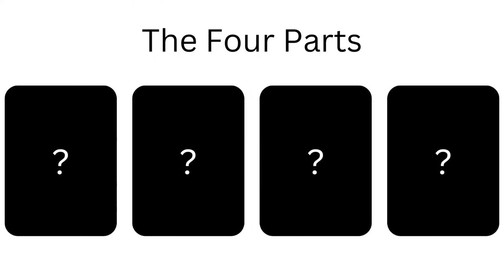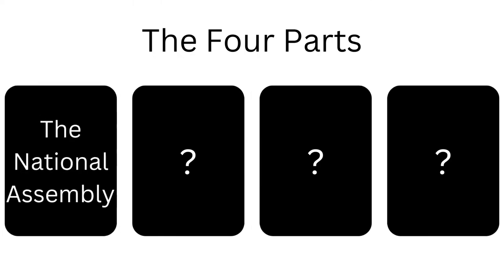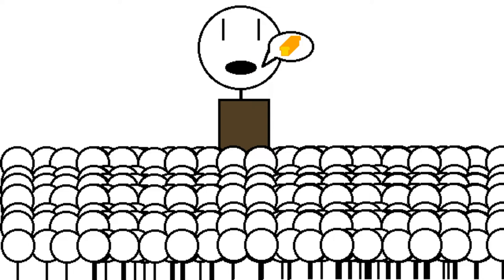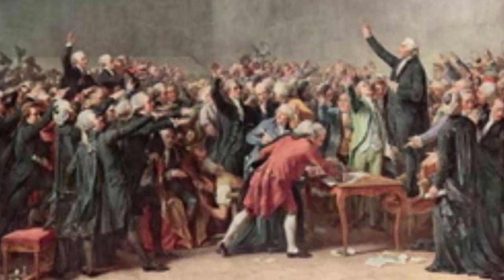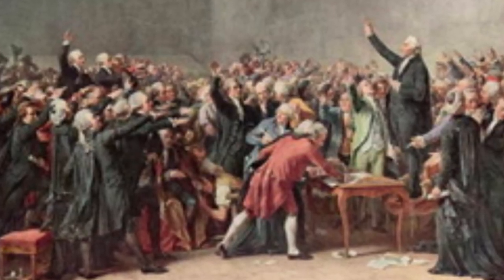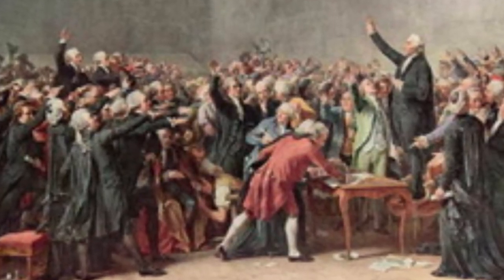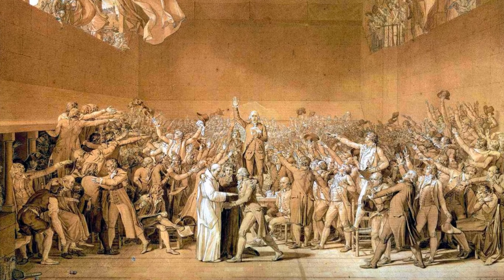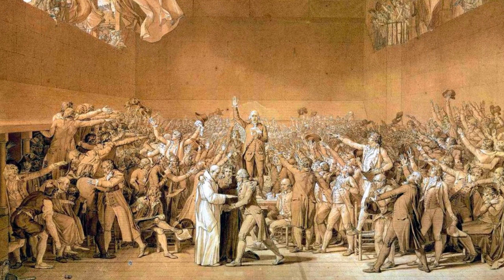The French Revolution is split into four parts. The first part was the National Assembly, which took place between June 17th of 1789 to September 29th of 1791. It was a major part of the French Revolution. The common people of France, the third estate, demanded the king ensure the people had food to eat by improving France's economic status.